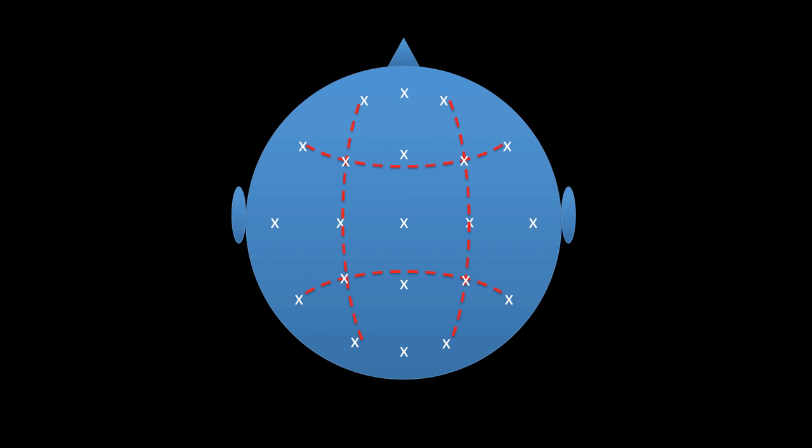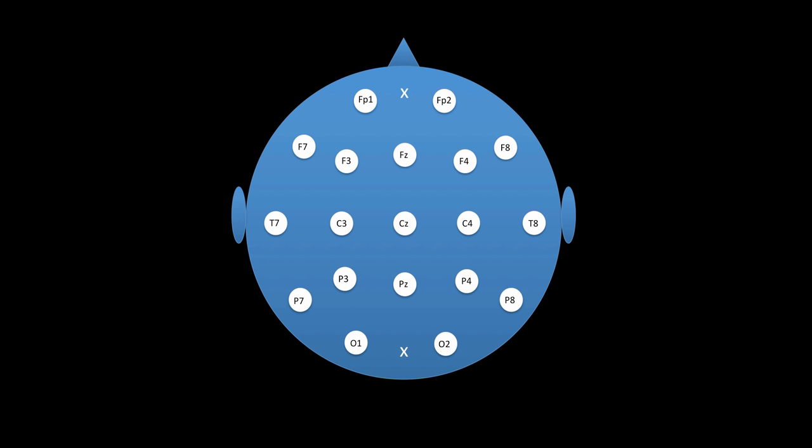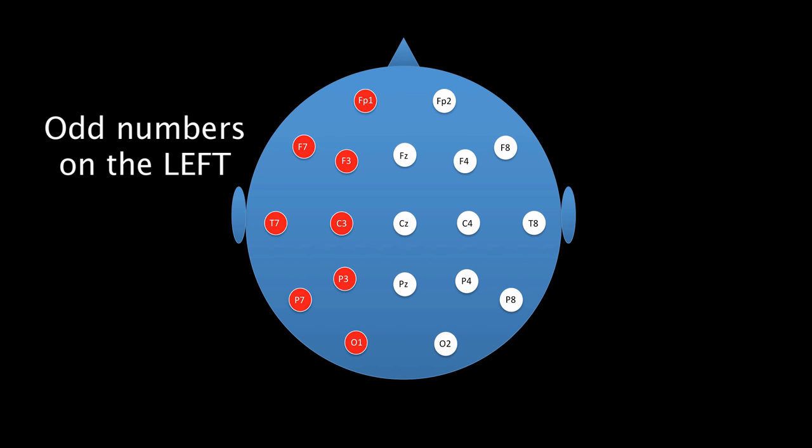Once all of these marks have been placed, the electrodes can be applied to the scalp of the patient. The electrodes are labeled as is shown here. The system is very simple, and each electrode is represented by letters and a number. The numbers indicate the side of the head, so that odd numbers are on the left side, and even numbers are on the right.